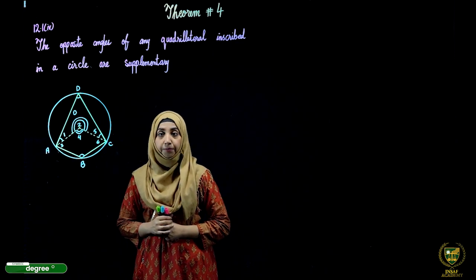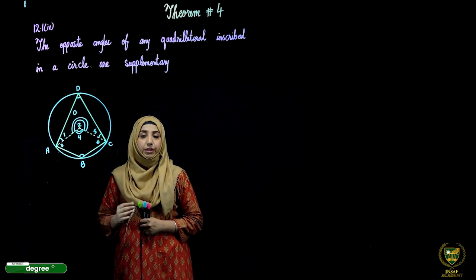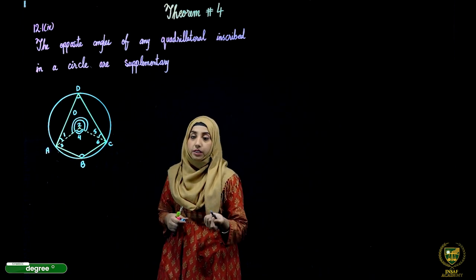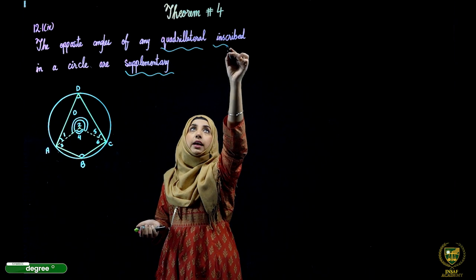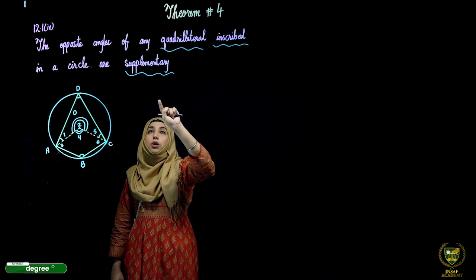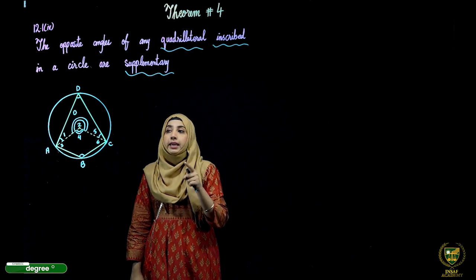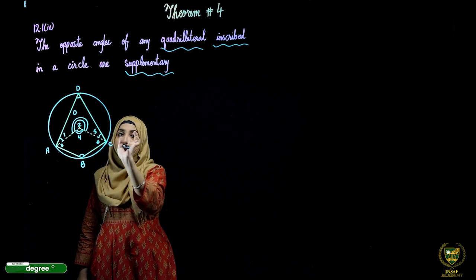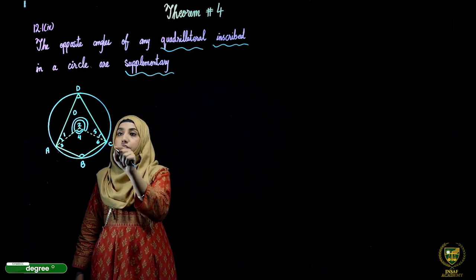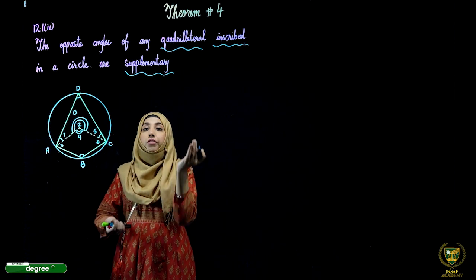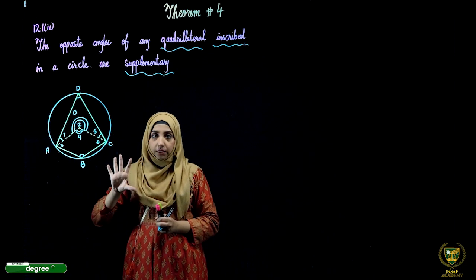First, understand the statement of the theorem: the opposite angles of any quadrilateral inscribed in a circle are supplementary. Let's understand the content before moving to the proof. The word 'inscribed' means the quadrilateral is placed inside a circle — inscribed in a circle.